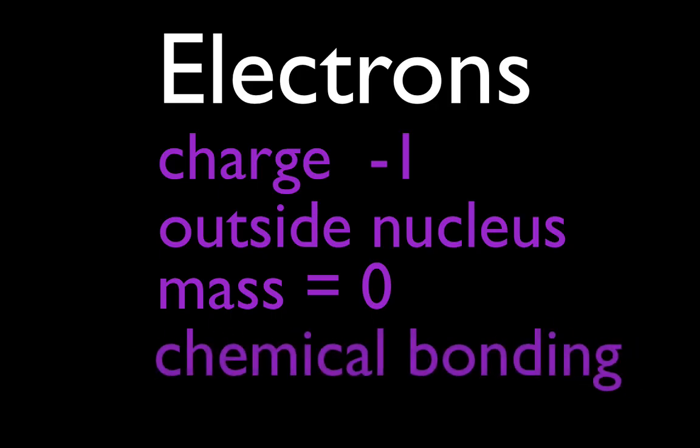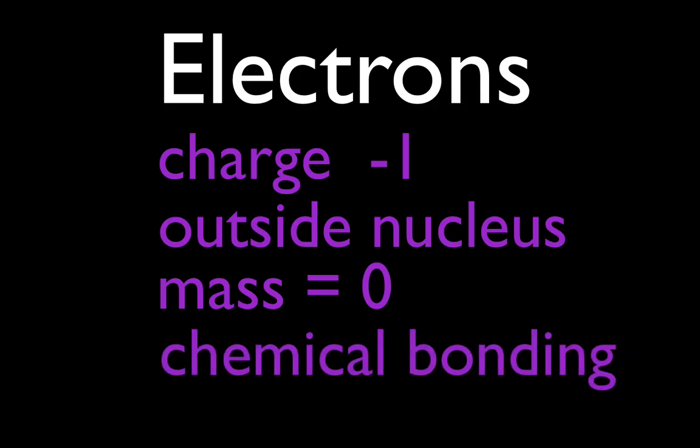And the electrons are involved in chemical bonding. It's really the electrons and the interaction between the electrons from one atom and the positively, the negatively charged electrons of one atom and the positively charged nucleus of another atom that holds chemical bonds together, that holds atoms together, that makes chemical bonds, that makes all the things that surround us.